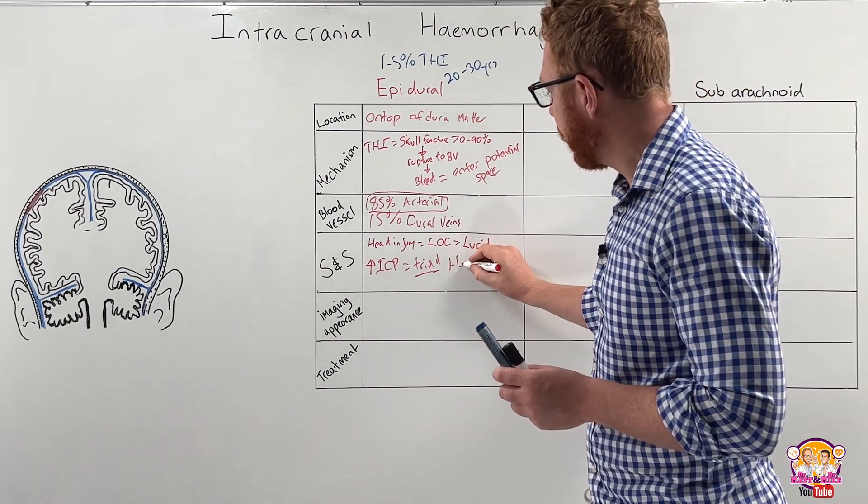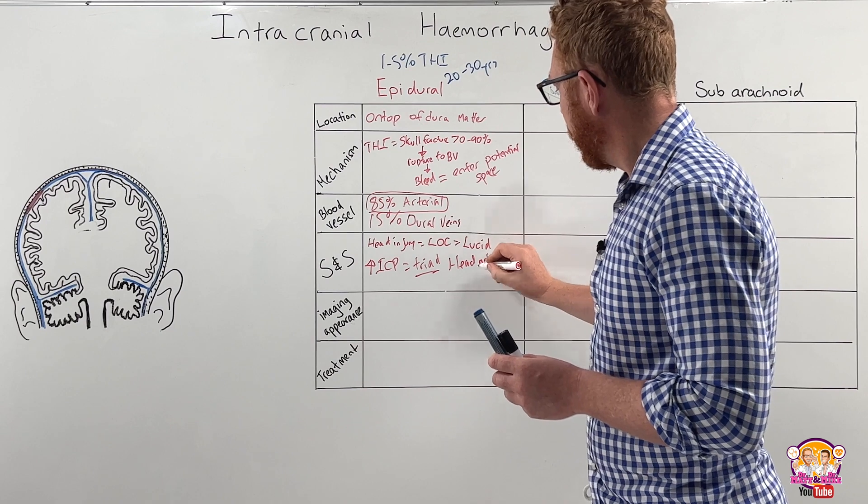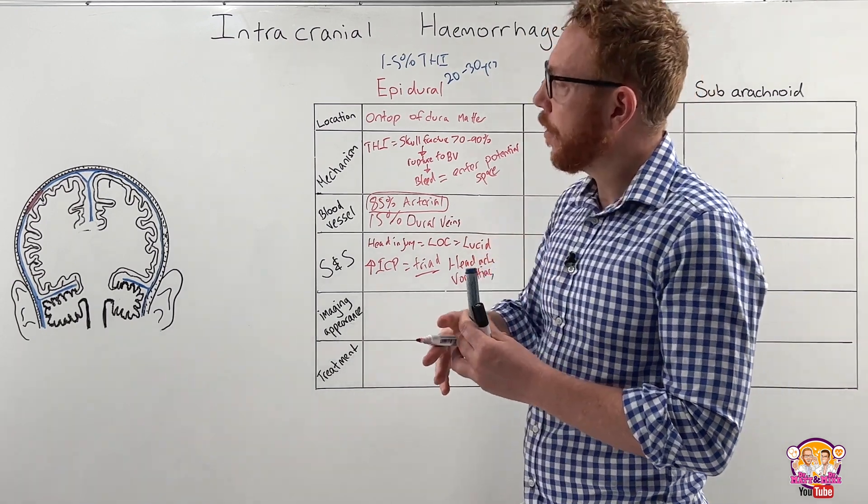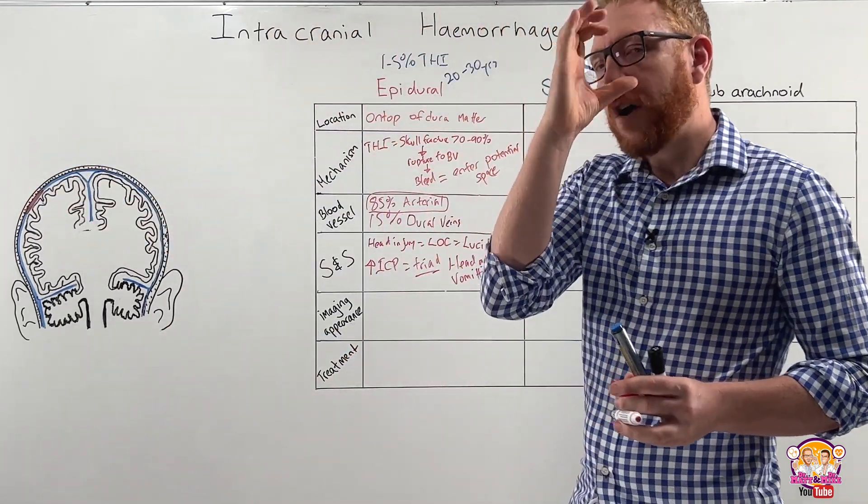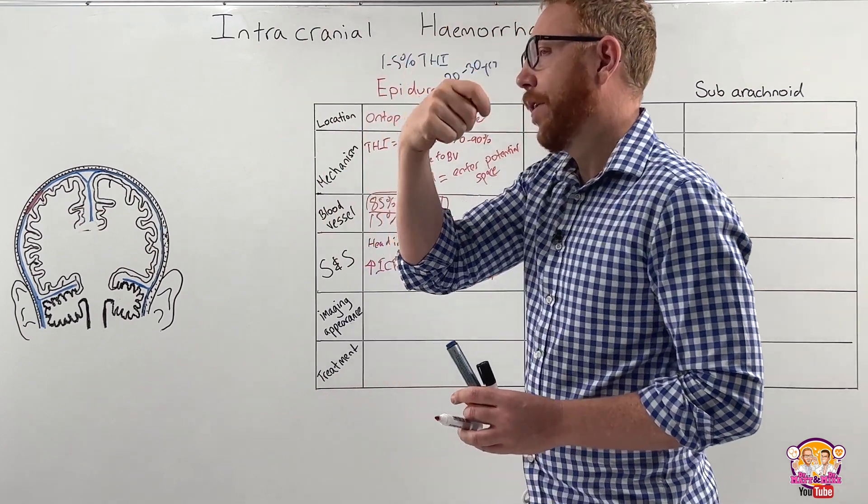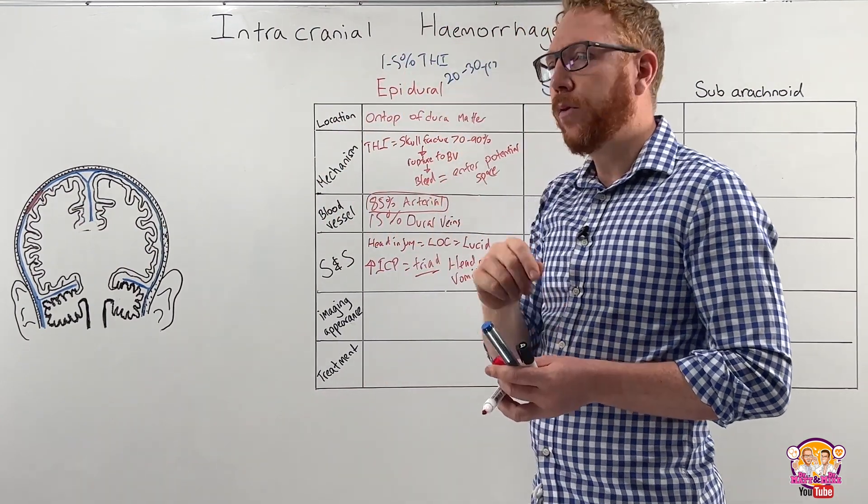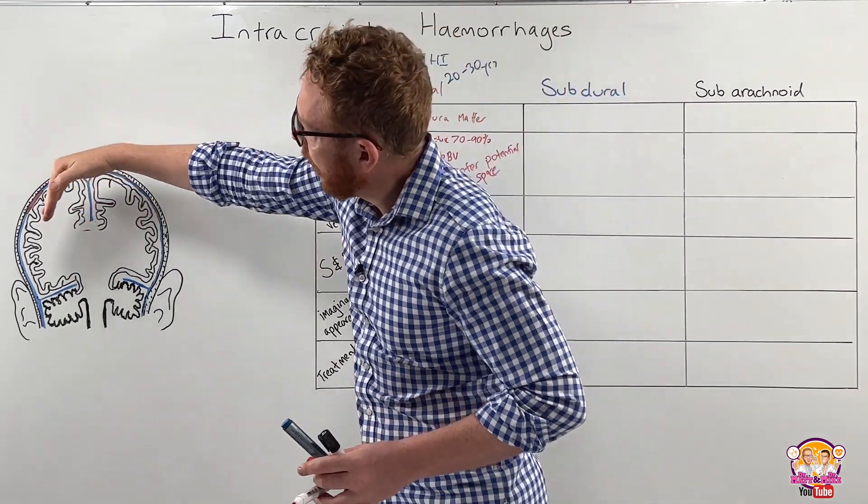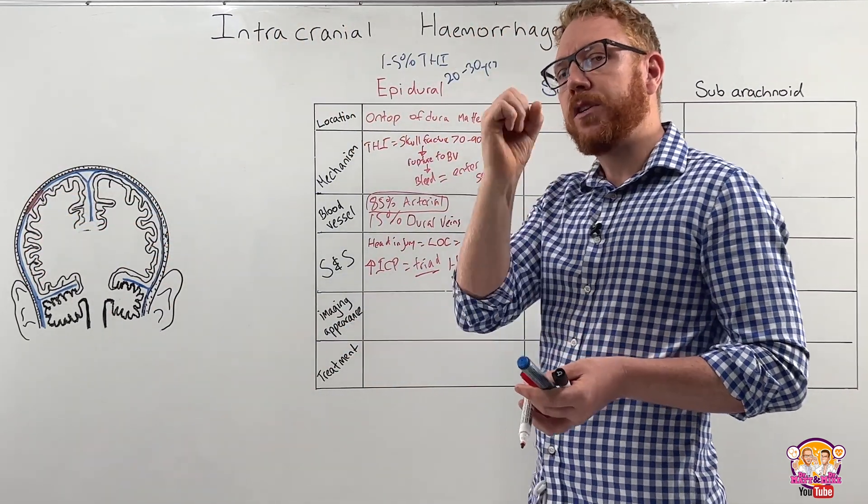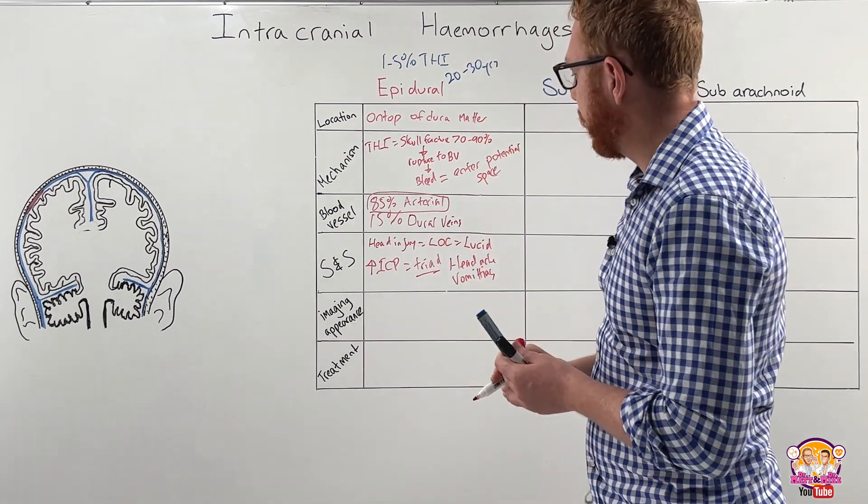We also will see headaches, vomiting, and on the side of the bleed, we can see a dilated pupil. So if this is on the left side, and we shine light in the left pupil, it would stay dilated. The reason for that is that pressure is going to start pushing down, compress the oculomotor nerve, which is the pupil constrictor. So that's turned off.